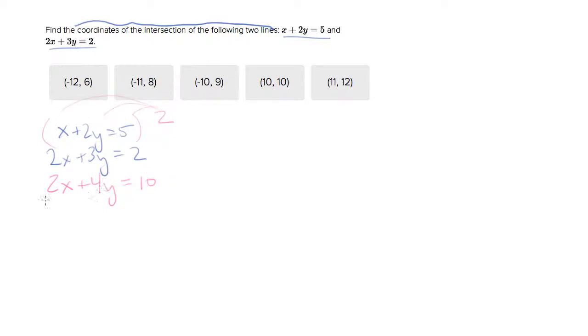Now we have two equations, two variables, and one of the terms in the equations has the same value, so we can subtract one from the other. 2x minus 2x is zero, 3y minus 4y is negative 1y, and 2 minus 10 is negative 8, or y equals 8.